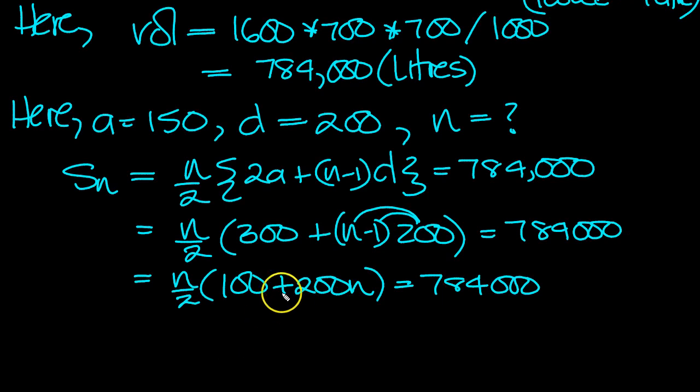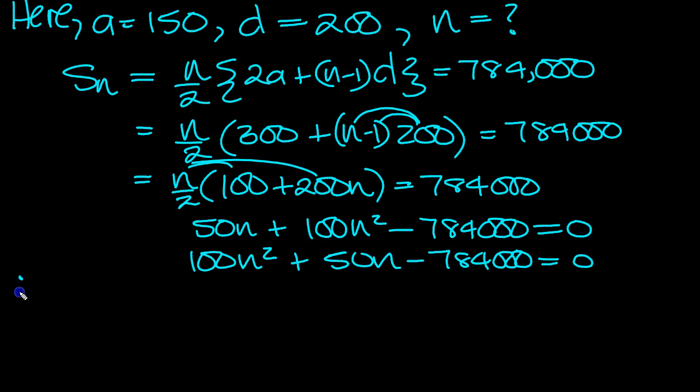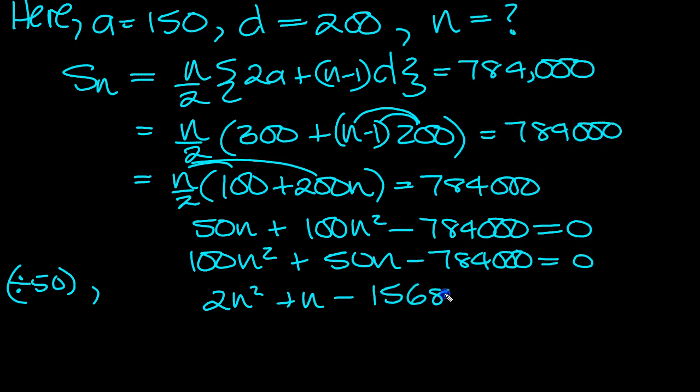So that tells us then that now we can expand this bracket. So we'll have 50n plus 100n squared minus, I'm going to bring that over at the same time as expanding the bracket, equals 0. It's a quadratic, so I'm going to rewrite it as 100n squared plus 50n minus 784,000. So let's do that then, so that we can simplify it a little bit more, gives 2n squared plus n minus 15,680 equals 0.